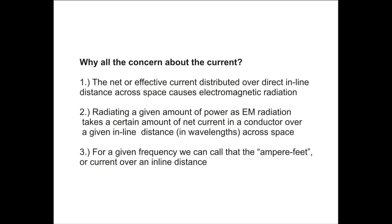So why all the concern about current? The net or effective current distributed over a direct inline distance across space is what causes electromagnetic radiation. To radiate a given amount of power, we have to have a certain amount of net or effective current in a conductor over a given inline distance in wavelengths across space. This isn't about how much we ball up in one tiny spot — it's the A-to-B space the antenna occupies. For a given frequency, we can call that the ampere-feet, or the current over that inline distance.